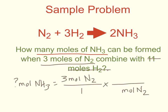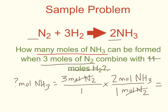This is my mole ratio step, so I'm going to put the moles of what I'm looking for — moles of ammonia — on the top. I get my numbers by looking back at my balanced chemical equation. The coefficient in front of nitrogen is 1, so I have 1 mole of nitrogen, and the coefficient in front of ammonia is 2, so I have 2 moles of ammonia gas. Moles of nitrogen cancels, and I take 3 times 2 to get 6 moles of ammonia, which can be produced in this reaction.